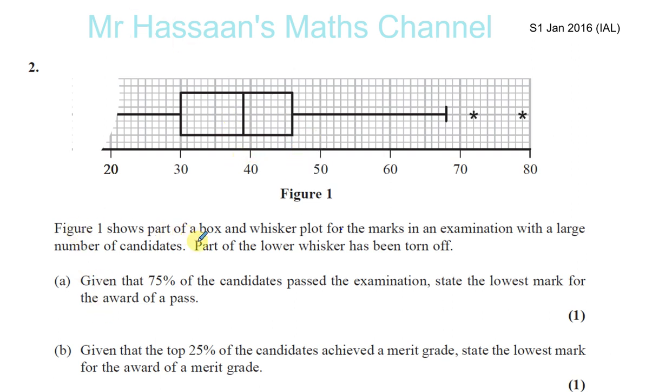Okay, Figure 1 shows part of a box and whisker plot for the marks in an examination with a large number of candidates. Part of the lower whisker has been torn off. Given that 75% of the students pass the examination, state the lowest mark for the award of the pass.